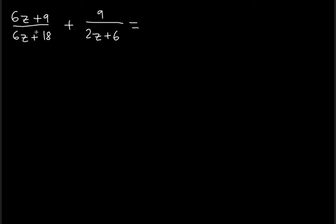So what we're going to write: 6z plus 9 on the top, we're going to factor the bottom. We're going to take out the common factor 6 for the first and second terms, in fact the greatest common factor.